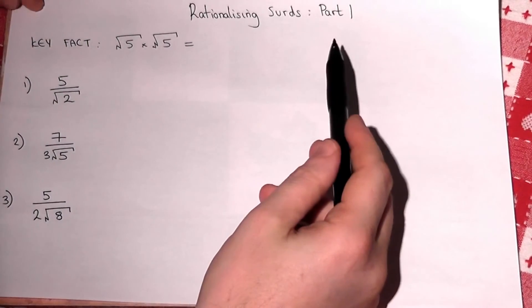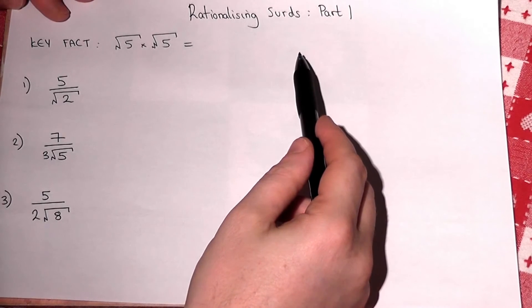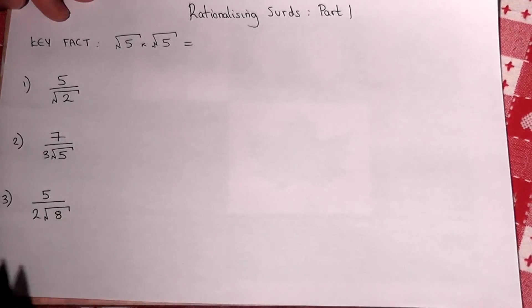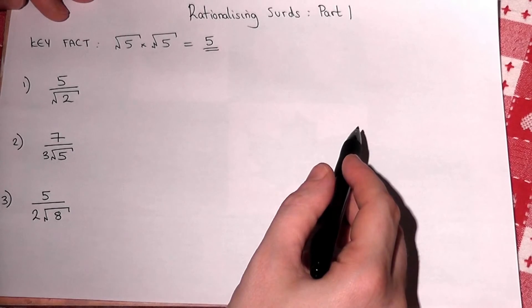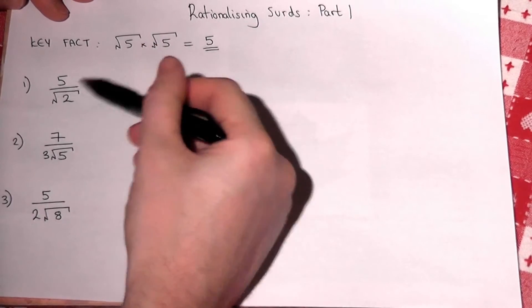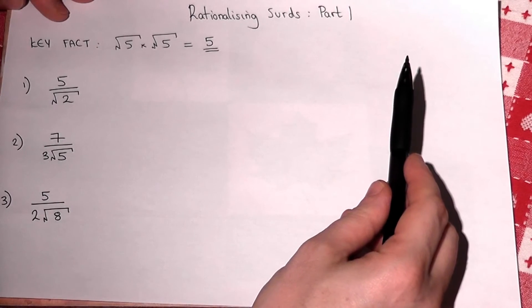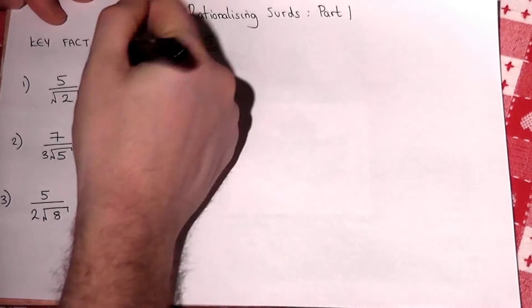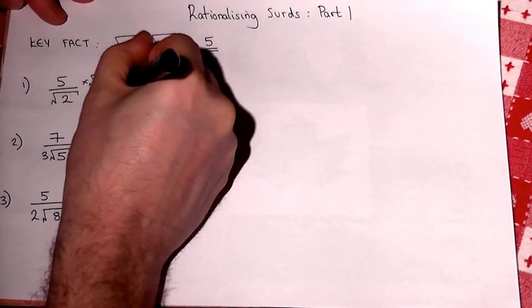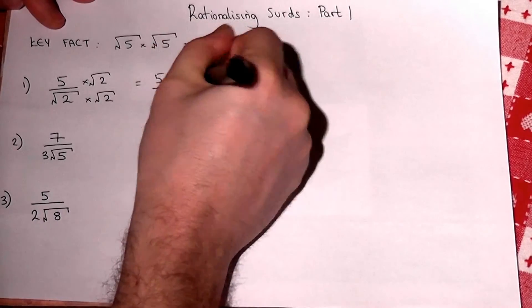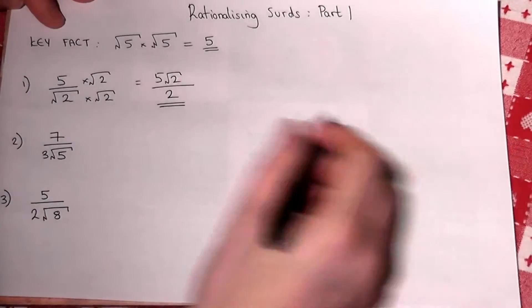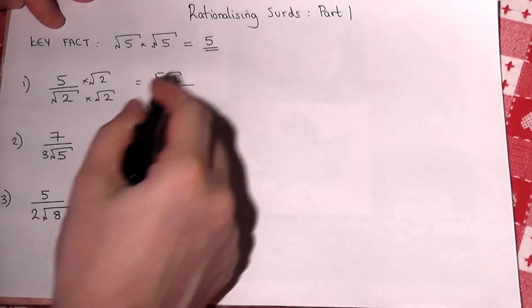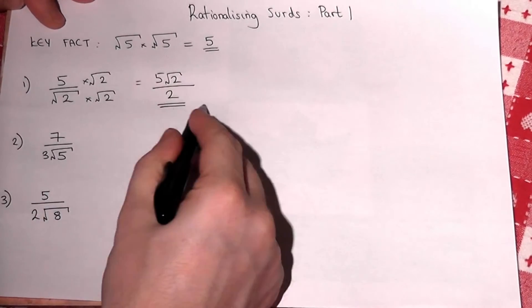This video looks at rationalizing surds, a key part of surd work. It uses one key fact: if we do root 5 times root 5, the answer is just 5 — the square roots effectively cancel out. We don't like fractions with the square root underneath, so if we multiply top and bottom by the surd, the fraction becomes rationalized, which is seen to be a better form.